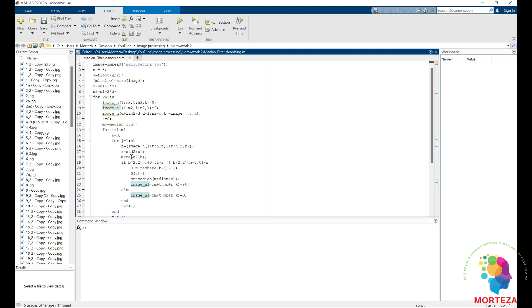So image N1 would contain the denoised version. As you can see, the image would come down and I would choose the window which would be three by three.